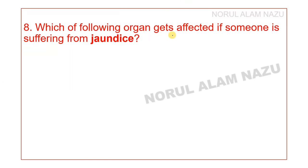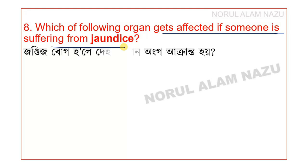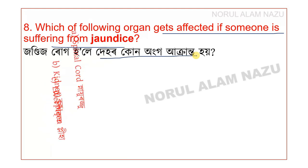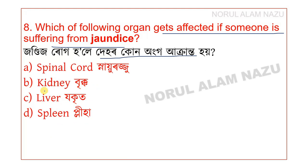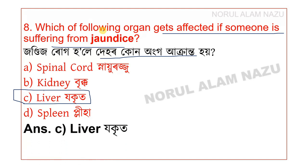Which of the following gets affected if someone is suffering from jaundice? Options are Spinal cord, Kidney, Liver, and Spleen. The answer is Liver. When a person suffers from jaundice, the liver is affected.